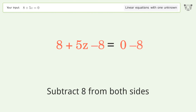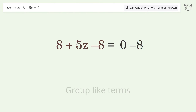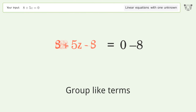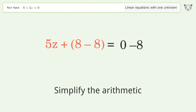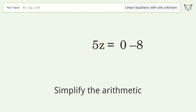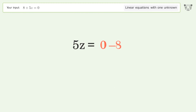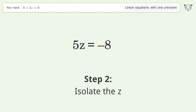Group all constants on the right side of the equation — subtract 8 from both sides. Group like terms, then simplify the arithmetic.